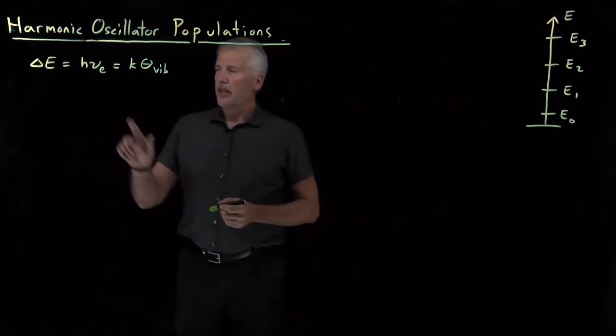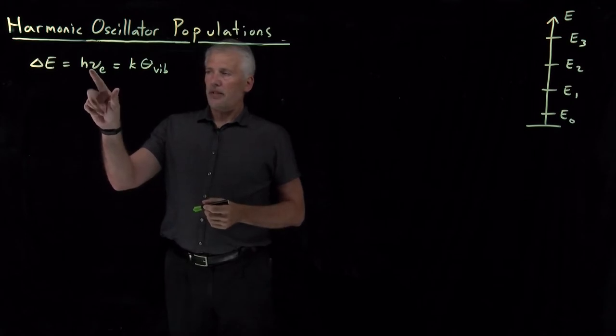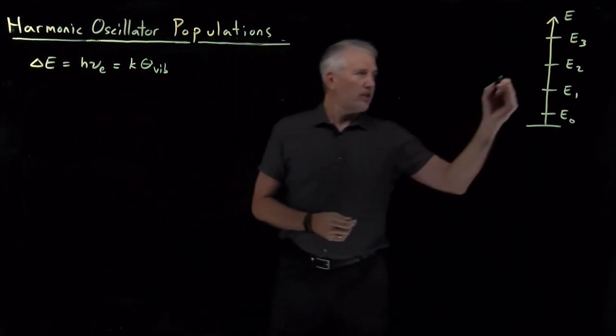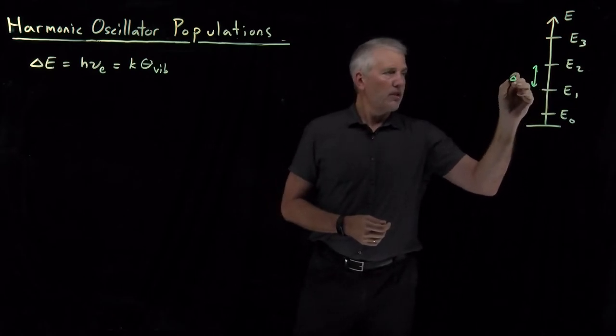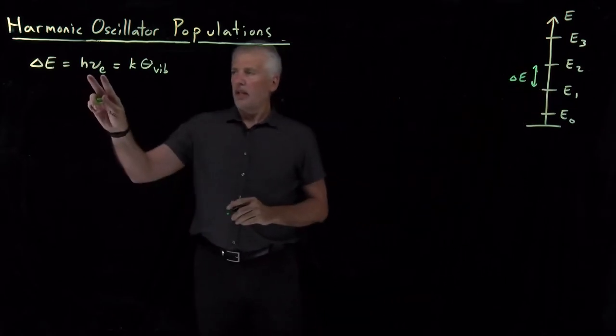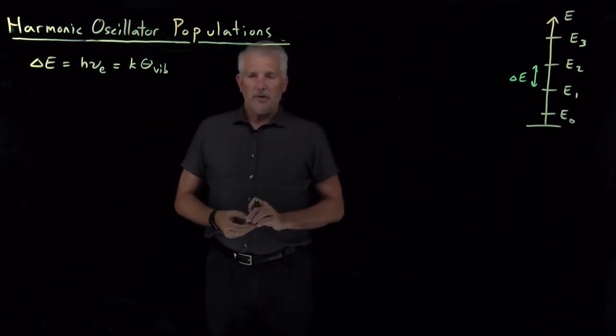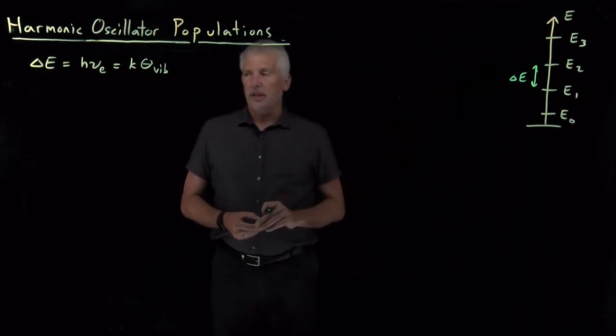We know that the size of this quantity H nu or K times theta, the gap between these energy levels, corresponds to the energy of photons in the infrared portion of the spectrum. Infrared photons are what we use to excite these transitions.